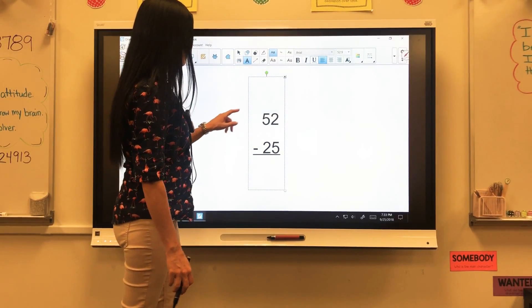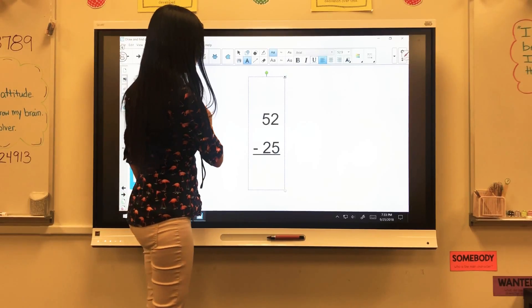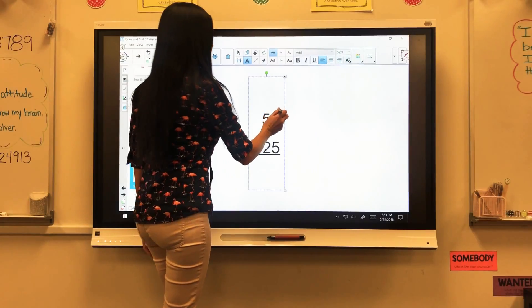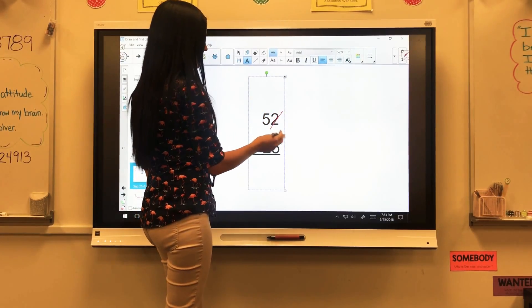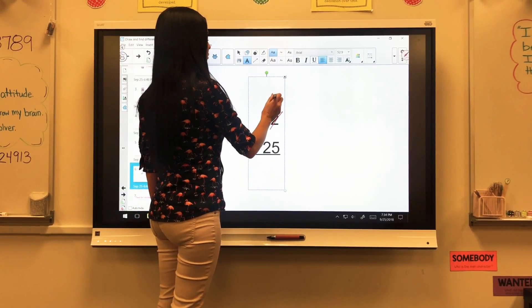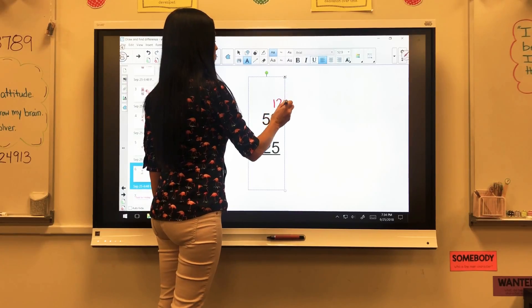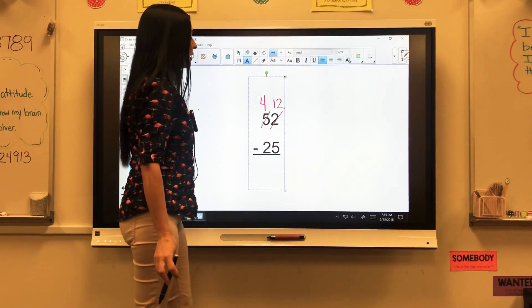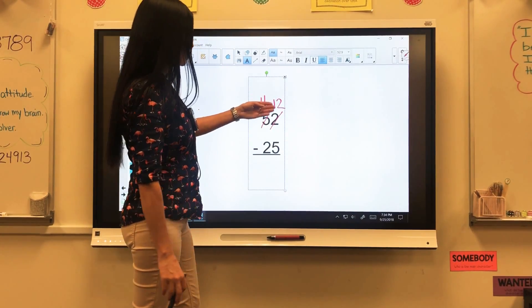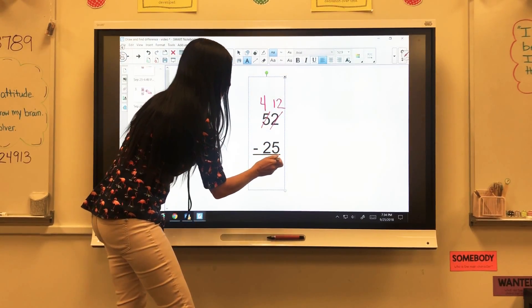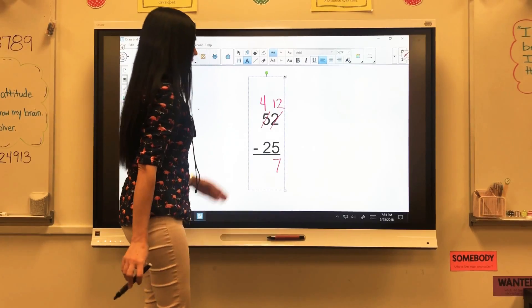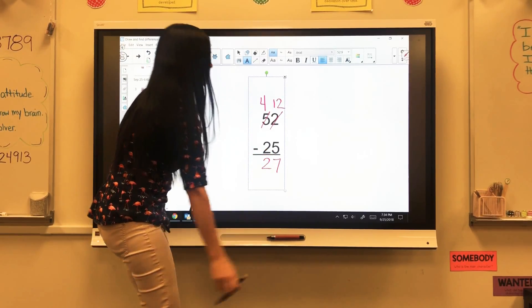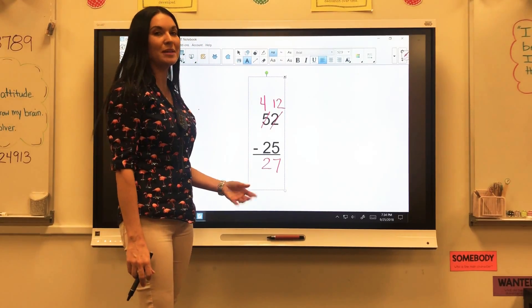Last one. I have 52 minus 25. So if I have 2, I can't take away 5. So I need to regroup. I'm going to cross out my 2. Since I'm taking a 10 from over here, 10 plus 2 is 12. My 5 is going to become a 4. And now I'm ready to subtract. 12 minus 5 is 7. And 4 minus 2 is 2. So 52 minus 25 is 27.